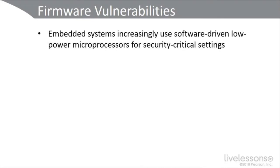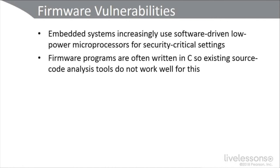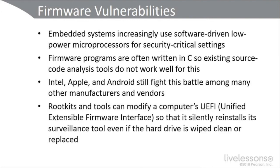Embedded systems increasingly use software-driven, low-power microprocessors for security-critical settings. Firmware programs are often written in C, so existing source code analysis tools may not work well for this. Intel, Apple, and Android still fight this battle, among many other manufacturers and vendors. Rootkits and tools can modify a computer's UEFI so that they silently reinstall their surveillance tool even if the hard drive is wiped clean or replaced.